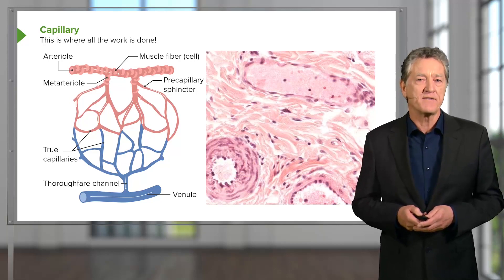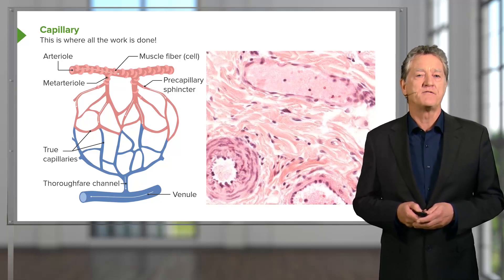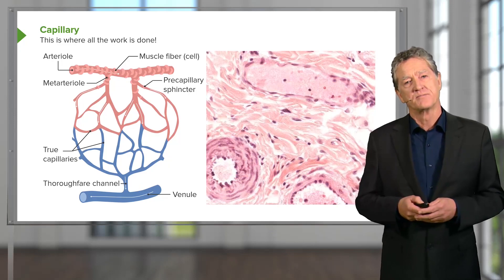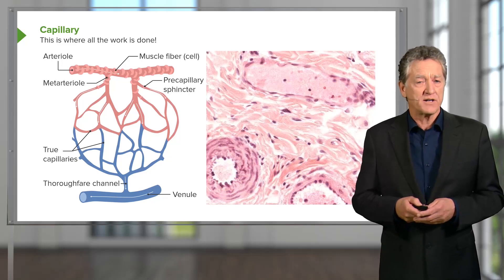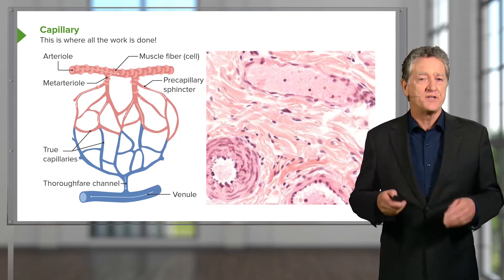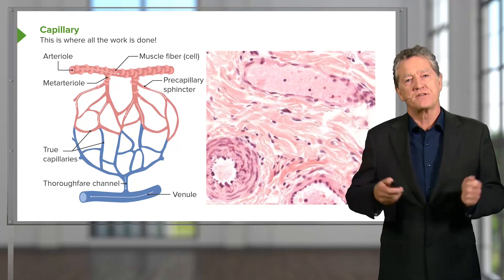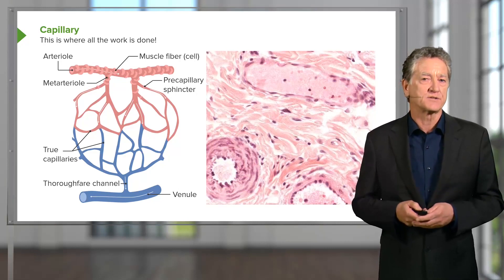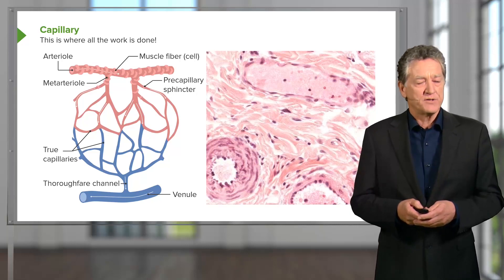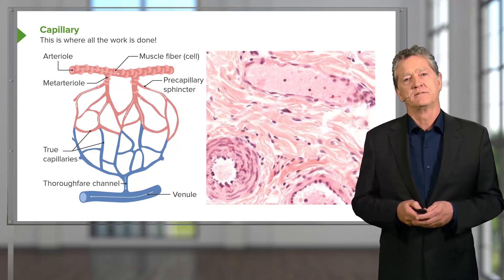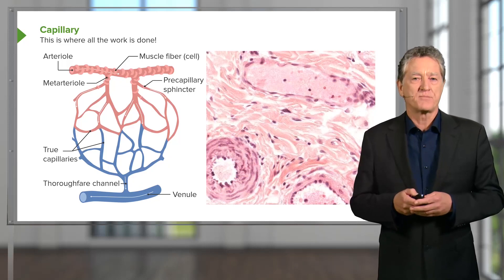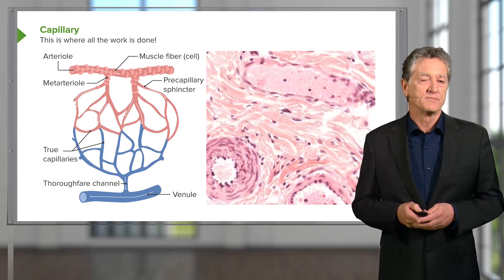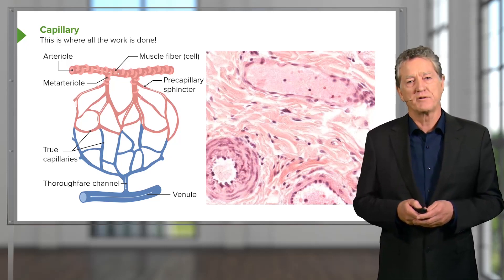The epidermis is avascular, but there is a vast network of blood vessels within the dermis right underneath that epidermis. So in conditions of heat where we want to try and dissipate body heat, we can open up these capillary channels and the heat can be dissipated across the surface. Conversely, if we're in very cold weather, we can close off that blood supply to the dermis and therefore not lose body heat. So these are often very important structures.